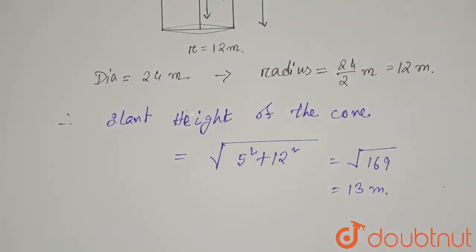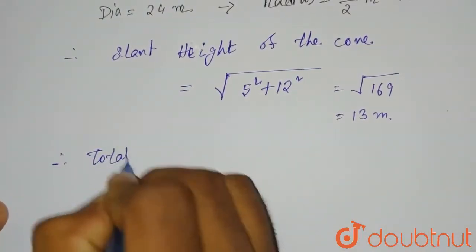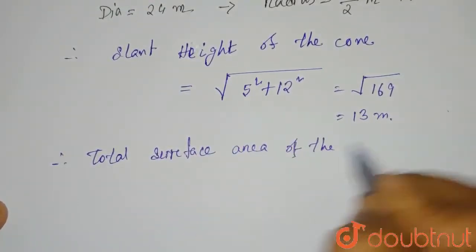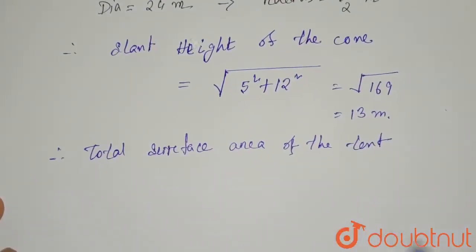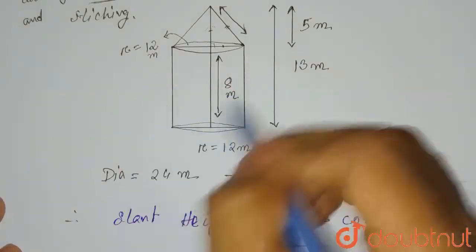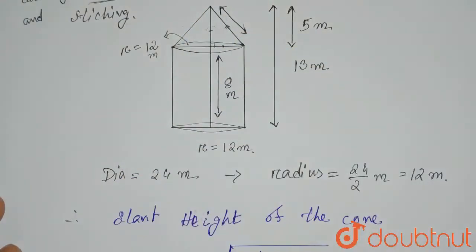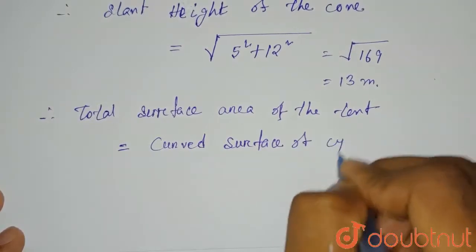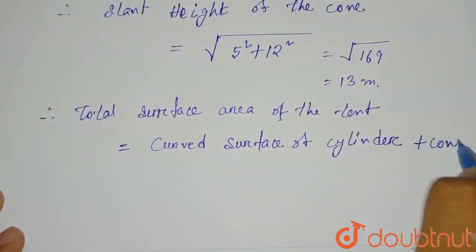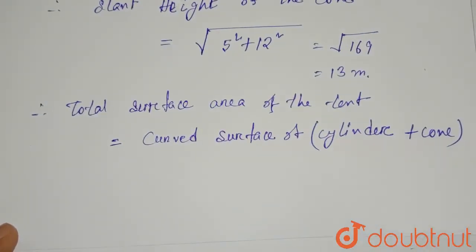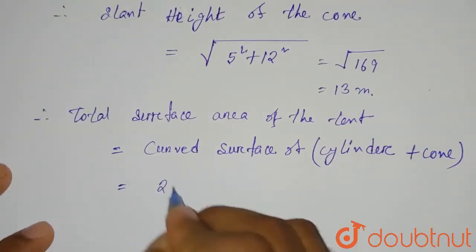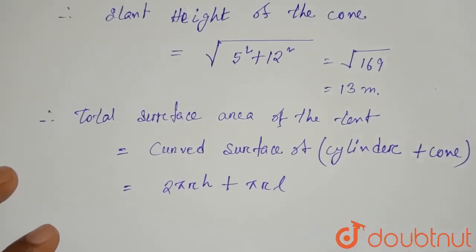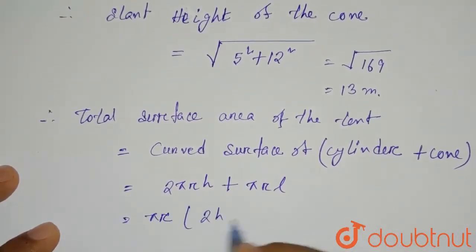Now that we have the slant height of the cone, we can find the total surface area of the tent. The total surface area of the tent equals the curved surface area of the cylinder plus the curved surface area of the cone. The formula is 2πrh plus πrl, which simplifies to πr times (2h + l).